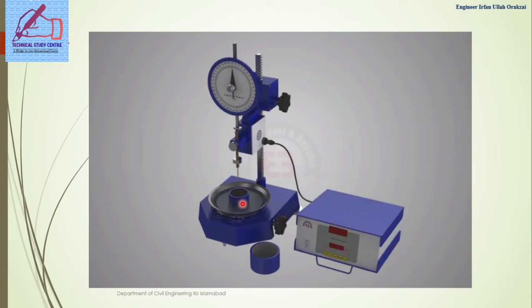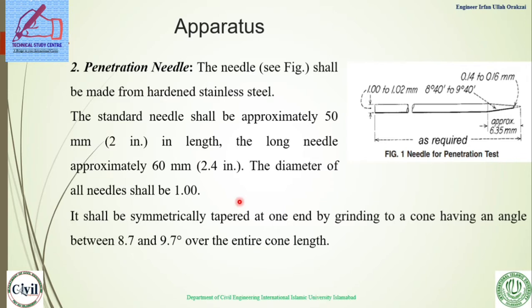The spindle should be easily detachable for checking its weight, and the needle or plunger should be just in contact with the surface of the sample before starting the test. The penetration needle should be made from hardened stainless steel. Its length is approximately 50 mm, its diameter is 1 to 1.02 mm, and at the end it is tapered with the diameter reduced to 0.14 to 0.16 mm. It should be symmetrically tapered by grinding to a cone having an angle between 8.7 and 9.7 degrees over the entire cone length.